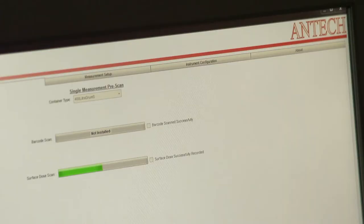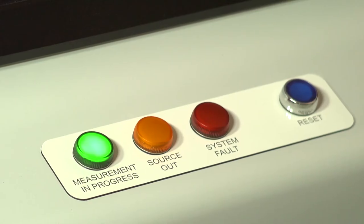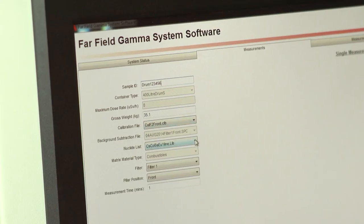This density information is employed by the far field analysis method to correct for gamma-ray attenuation in the drum matrix material.